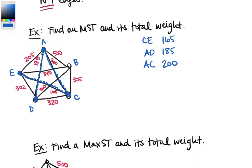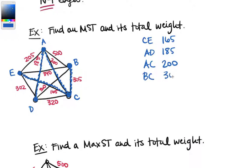We still haven't hit vertex B, so whatever edge we choose next has to hit B. The next cheapest edge is 205, but marking 205 would create a circuit, so we can't use that edge. Then there's a jump: 302 would also create a circuit, so we can't use 302. But we can use 305 — edge BC with weight 305 — which connects to B without creating a circuit.